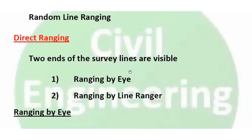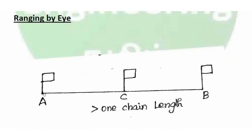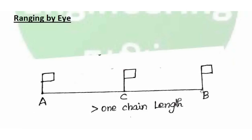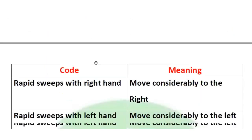Ranging by Eye means intermediate points are fixed using eye judgment based on A and B end stations. The instructions are fixed by three ranging rods, aligned on the same line by eye. If we fix the range by eye judgment, that is Ranging by Eye.